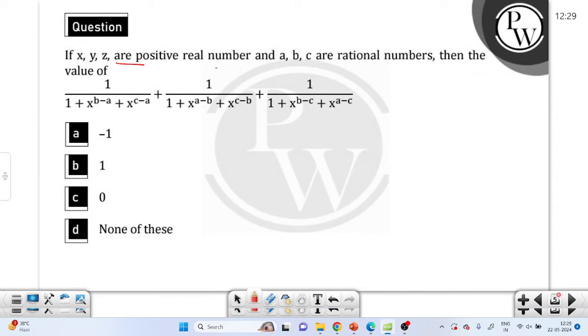So, we have a question. If x, y, z are positive real numbers and a, b, c are rational numbers, then the value of this is